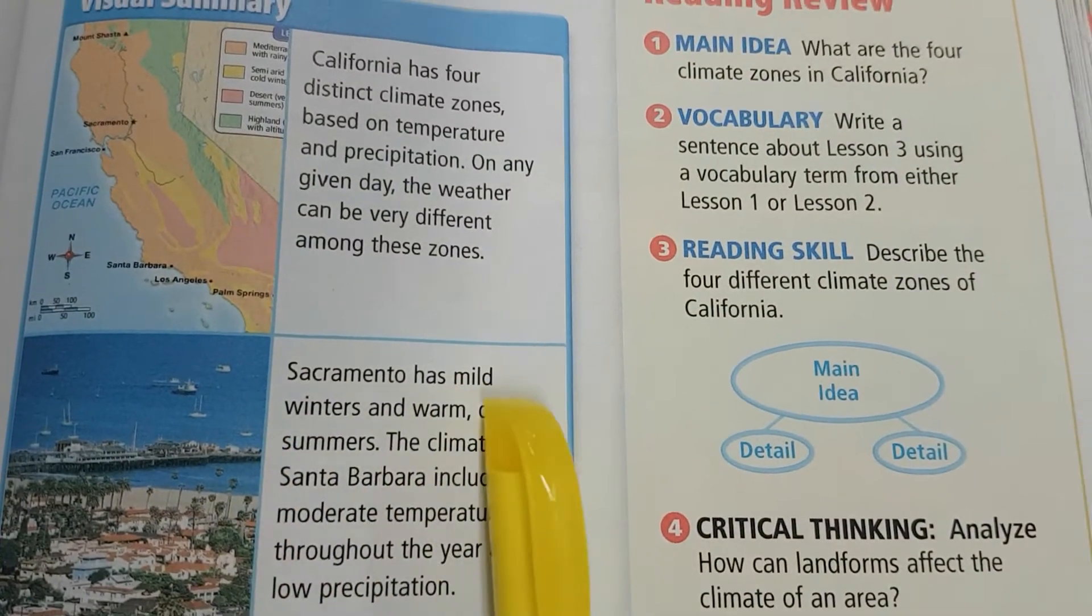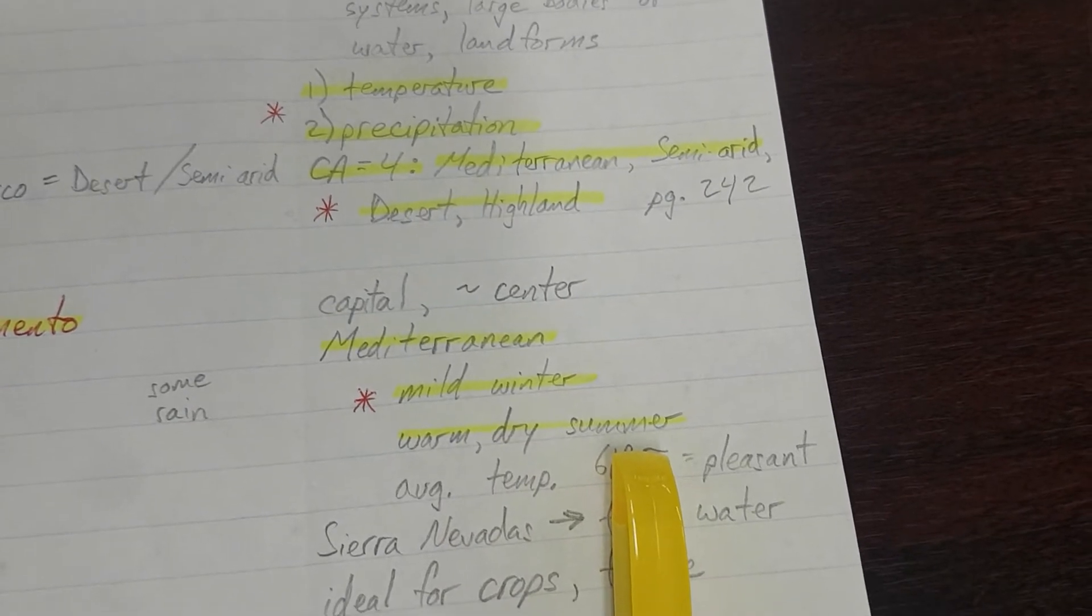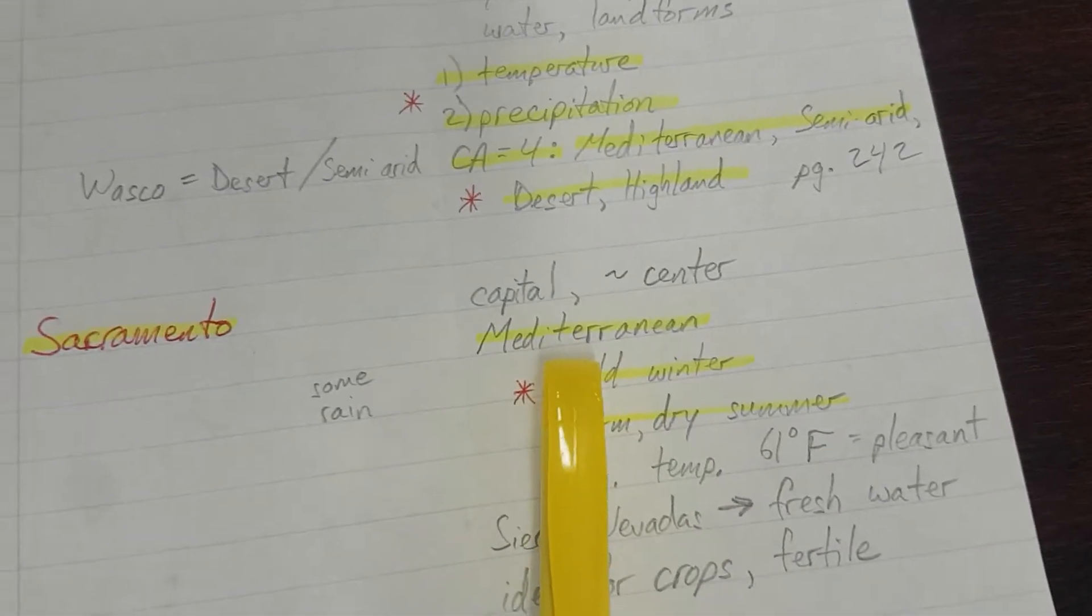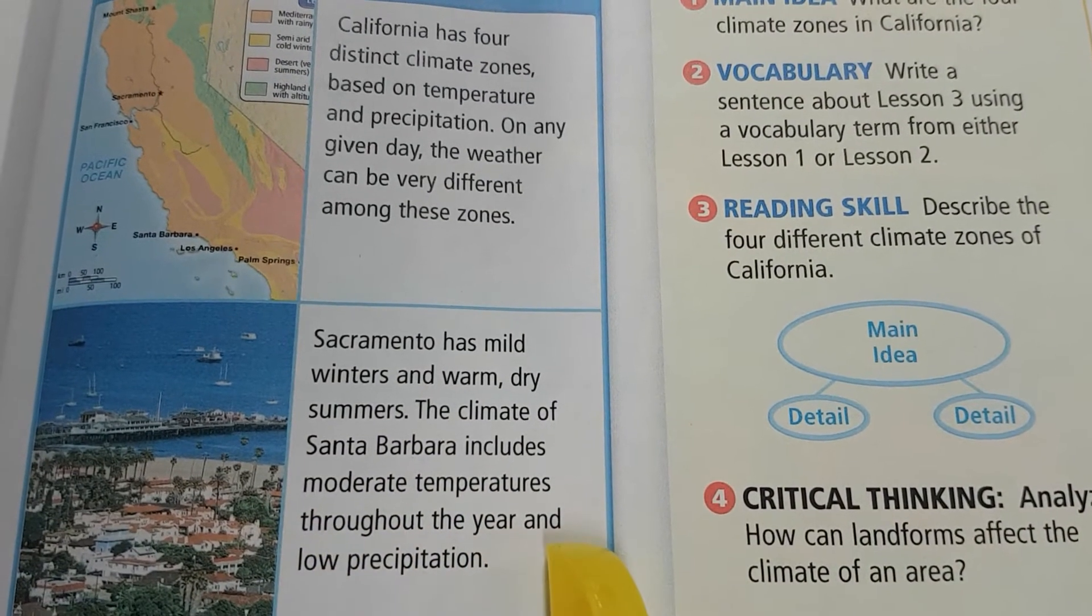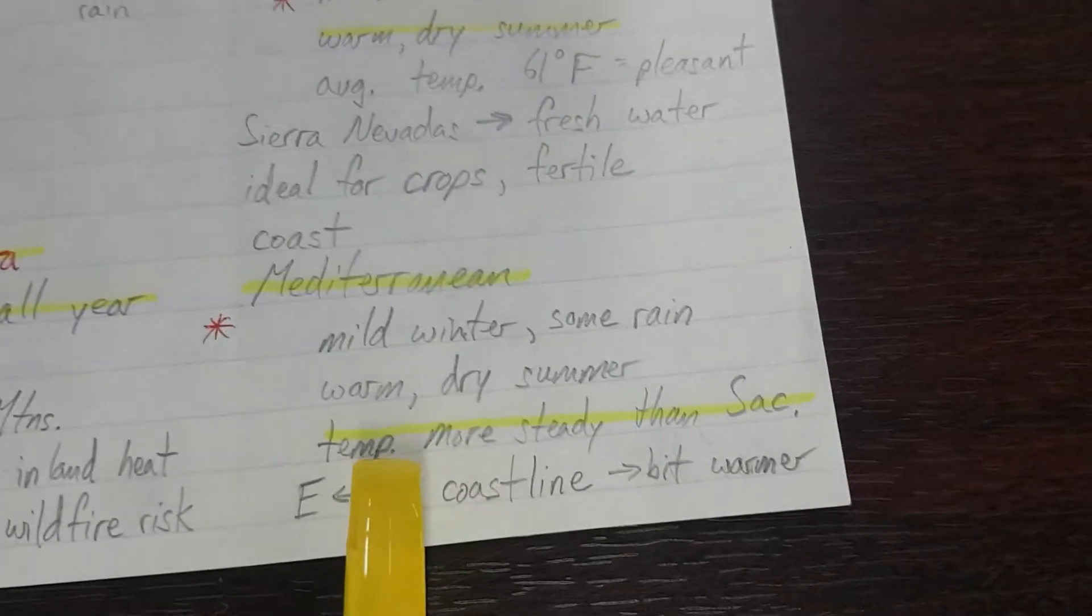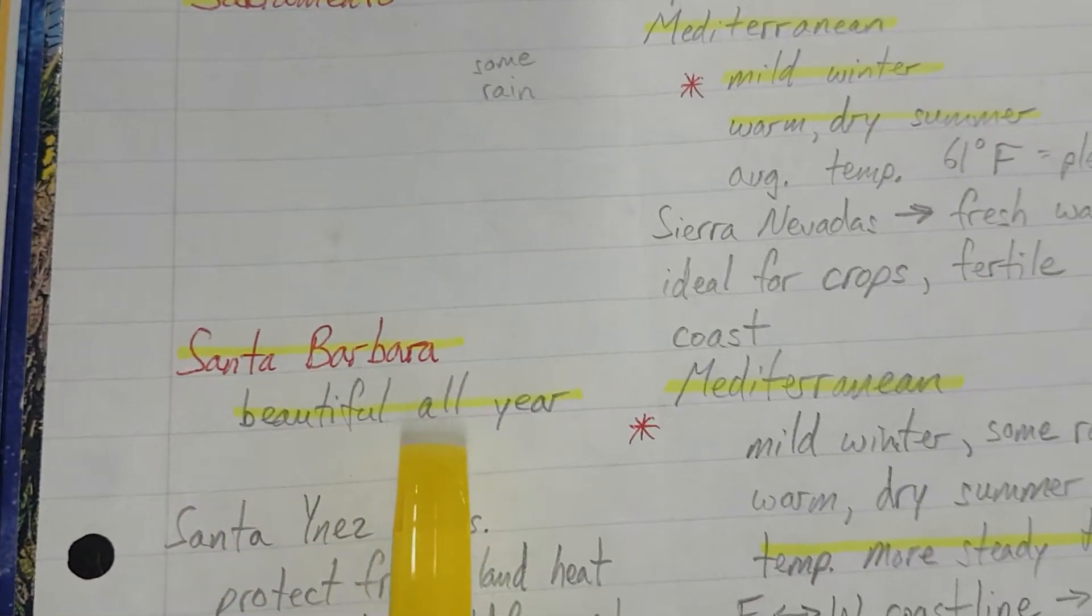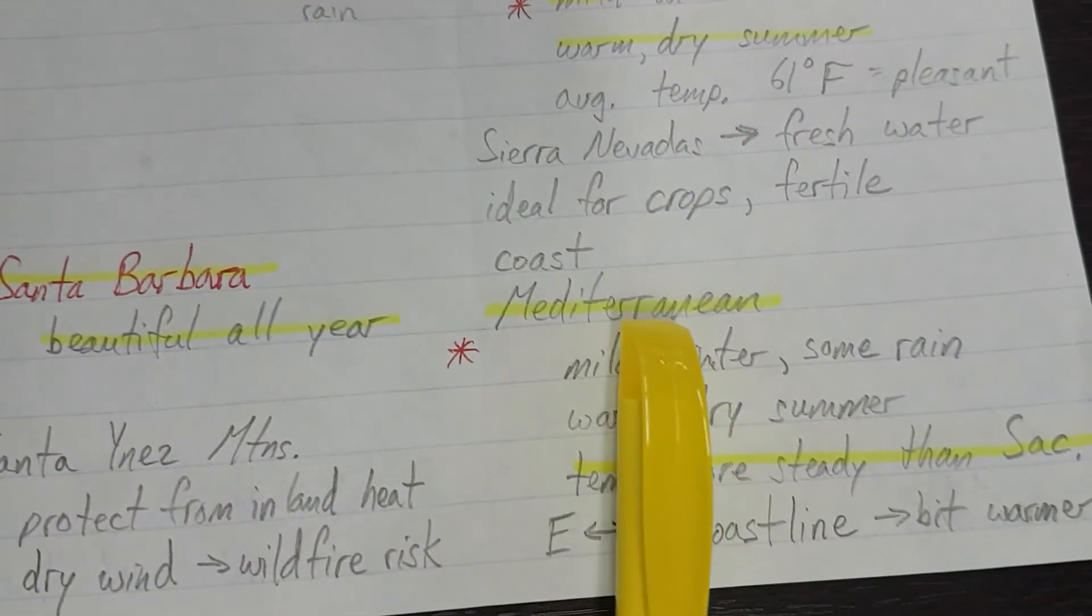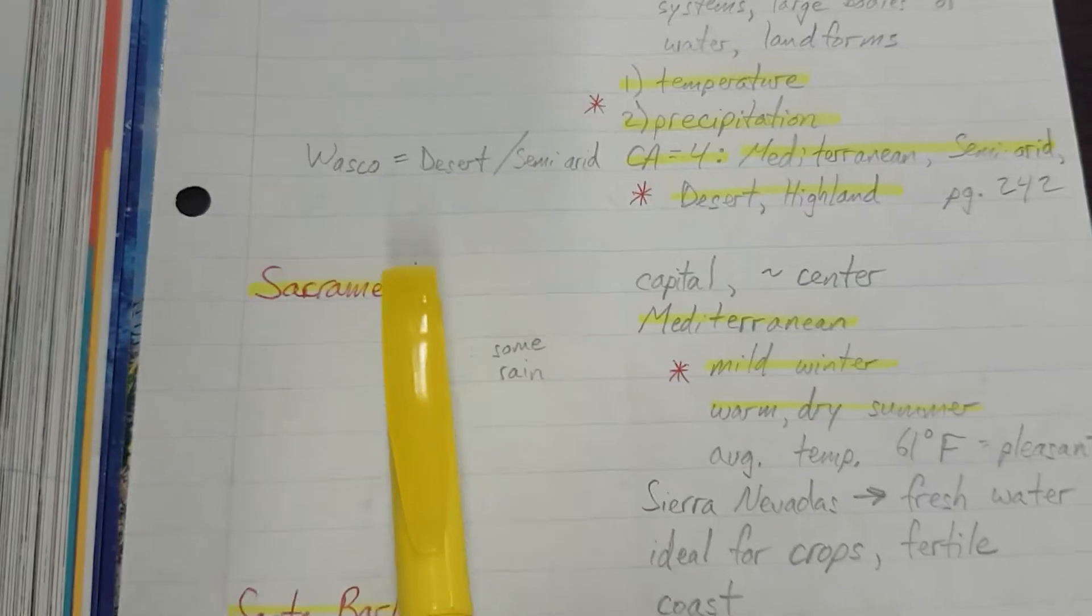Sacramento has winters, has mild winters, and warm dry summers. Sacramento, mild winter, warm dry summer. That means it's a Mediterranean climate. The climate of Santa Barbara includes moderate temperatures throughout the year and low precipitation. Santa Barbara, temperatures are more steady than Sacramento. That's that part about being moderate temperatures. And it's throughout the year with low precipitation. It's beautiful all year. This is Mediterranean also. So we're going to say something in our summary about how Santa Barbara also has a Mediterranean climate like Sacramento, but the temperatures are more steady. So it's beautiful all year round.